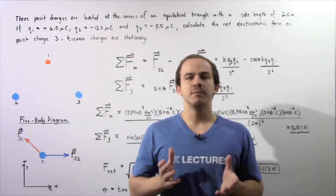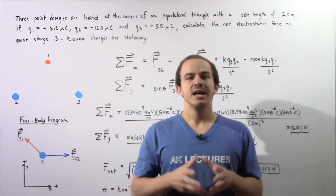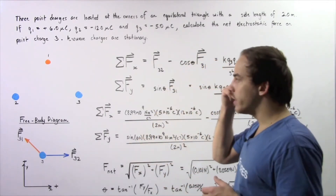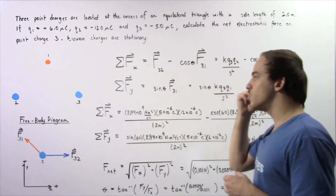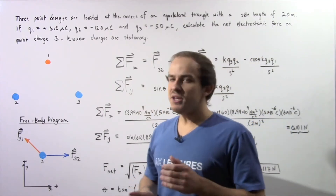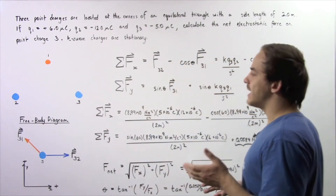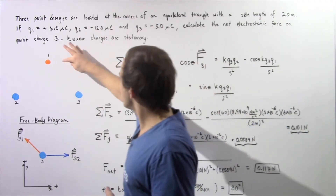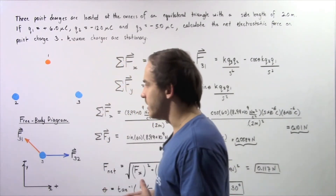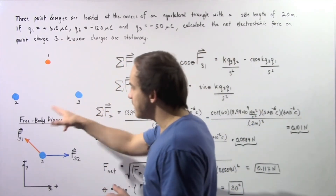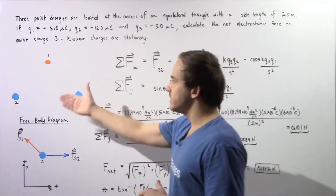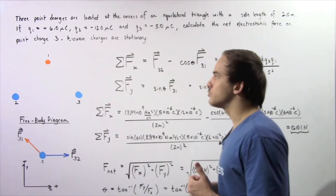Let's look at the following example in which we're going to calculate the net electrostatic force acting on a point charge as a result of two other point charges. Three point charges are located at the corners of an equilateral triangle with a side length of two meters. We have point charge one, point charge two, and point charge three. The distance between any two point charges is two meters because we're dealing with an equilateral triangle.